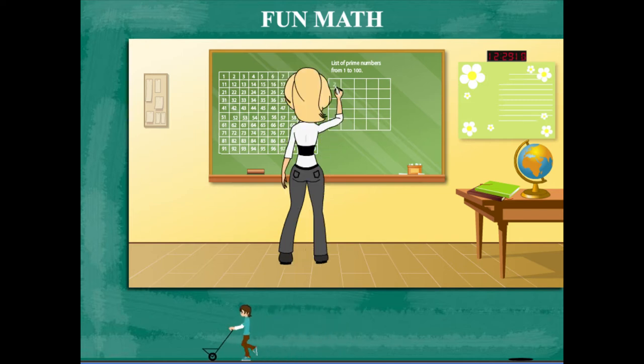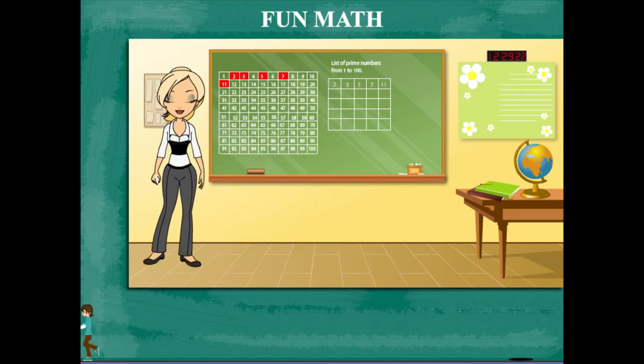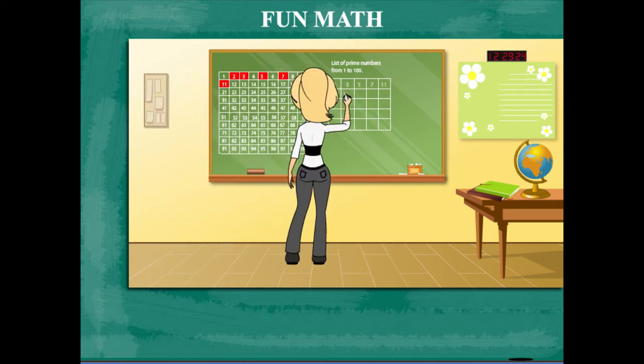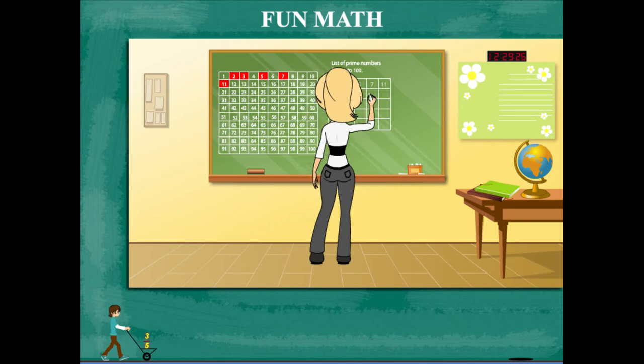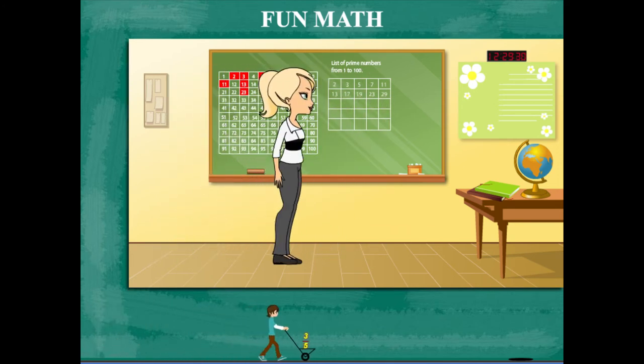She fills up her table: 2, 3, 5, 7, 11 in the first row, 13, 17, 19, 23, 29 in the second row.